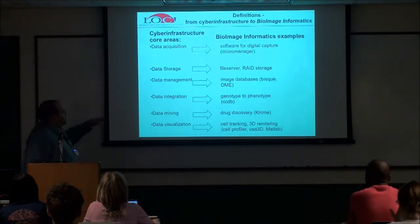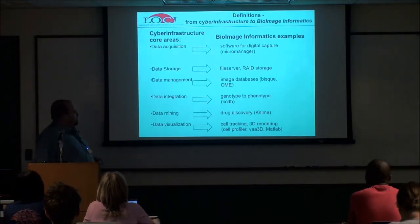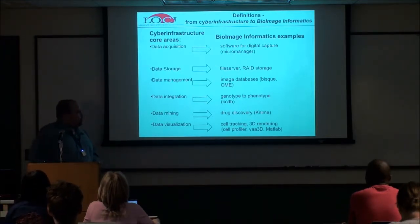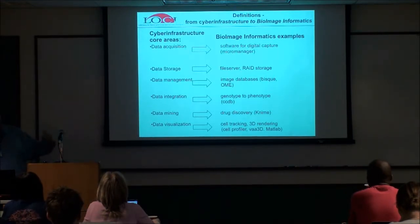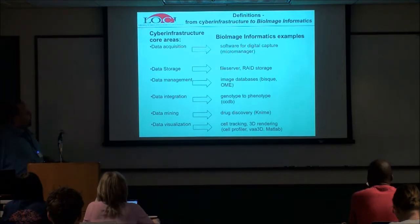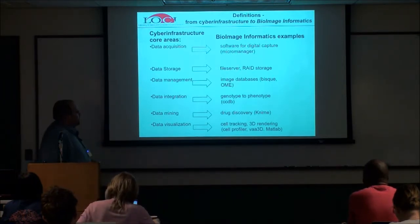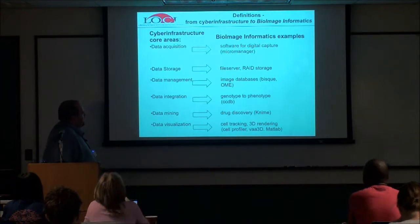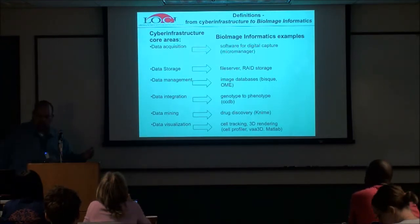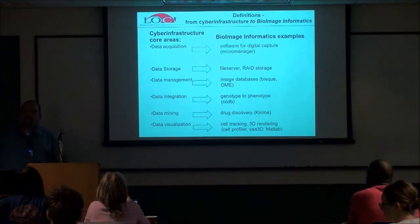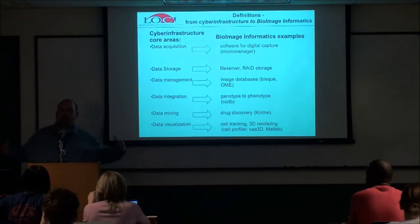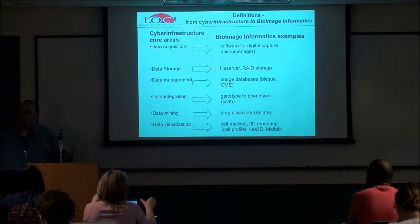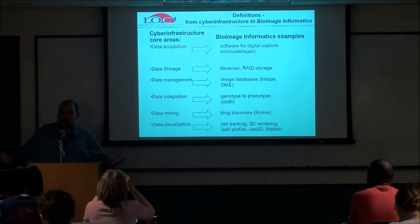There's a big controversy in the field about how to deal with that. There's data management — image databases, ways of sharing your data, putting your data into databases to share with yourself, your PI, your collaborators. And data integration is a relatively new idea: trying to link genotype with phenotype. You're acquiring data not as a self-standing data set necessarily, but as part of an overall story. We do fluorescence — I call it genetic paintball — because we want to label genes and get after function.